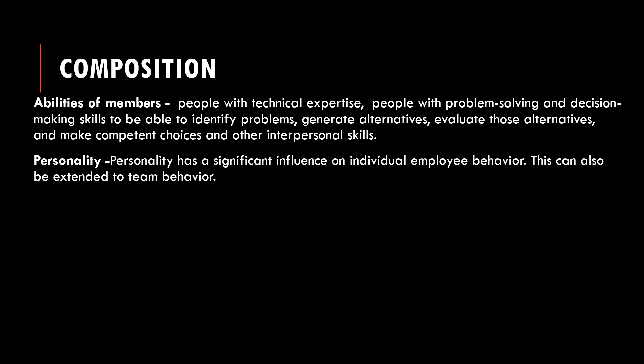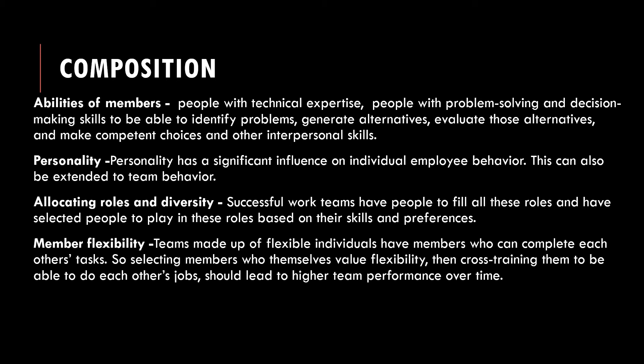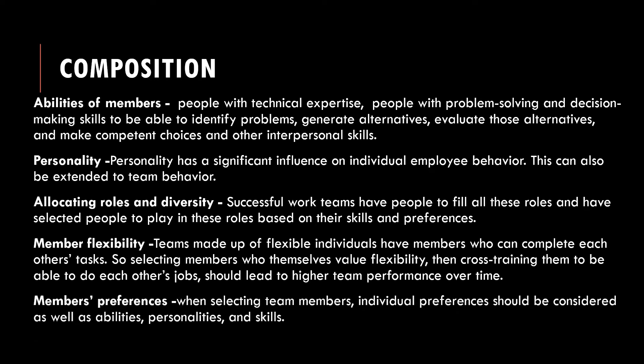The first key component, work design, covers what kind of autonomy, freedom, and skill variety is needed to motivate members. The second key component is composition, which includes variables related to how a team should be staffed. In this category we look at the ability and personality of team members, allocating roles and diversity, the size of the team, member flexibility, and member preferences. Ability of the members means three kinds of skills are needed: first is technical expertise.